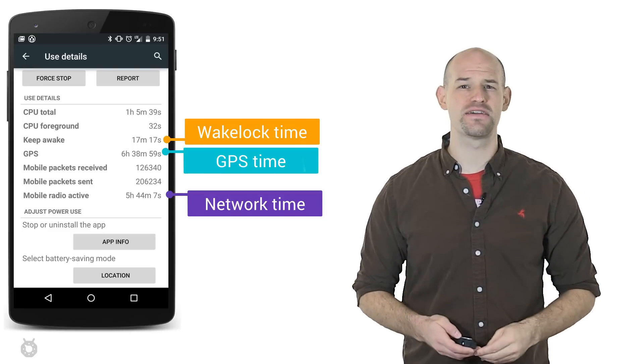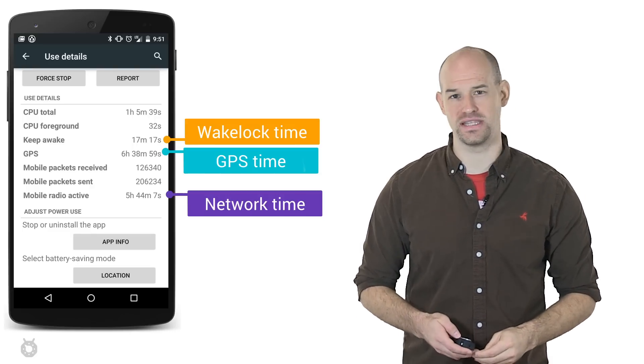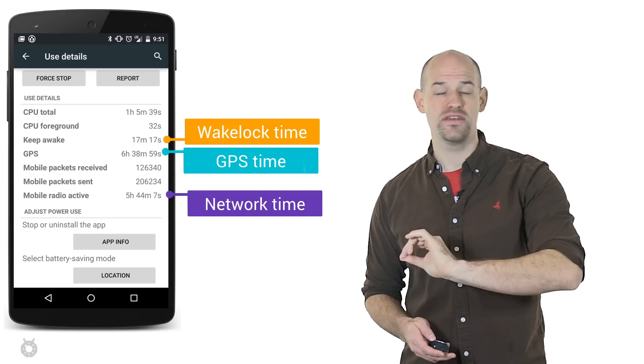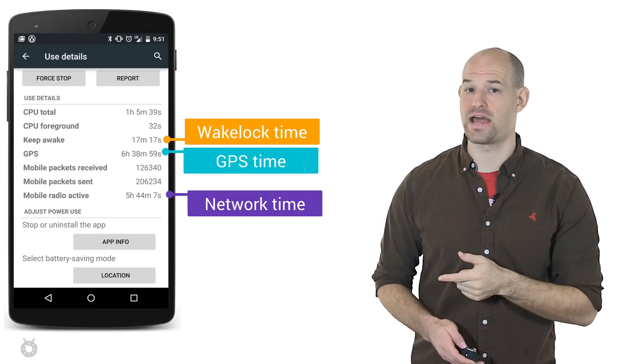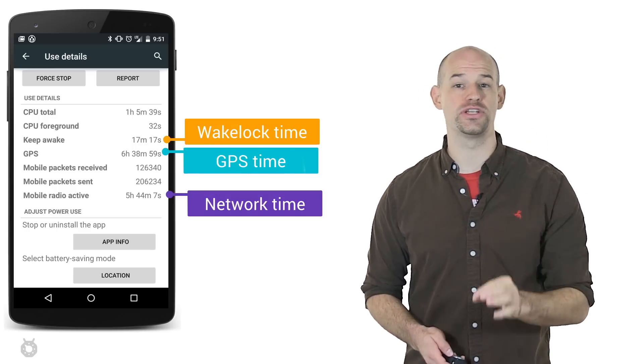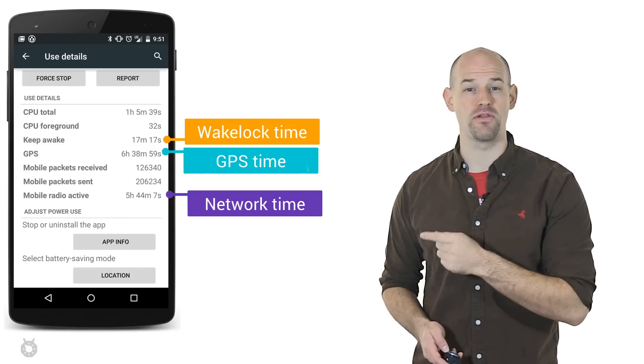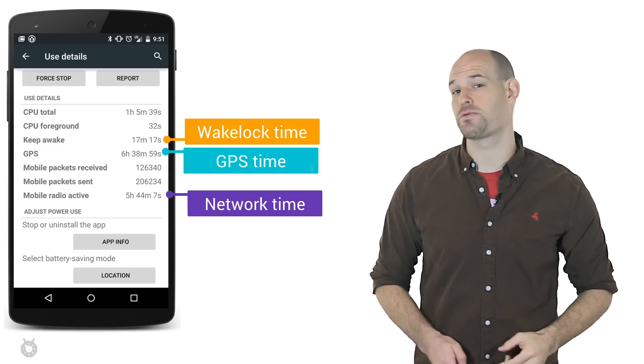Thankfully, Android has several tools to help you track down and fix these battery issues. Firstly, you can get battery data stats on the device by going to Settings, and then Battery, and then choosing the application you're interested in. You'll notice that the data reporting on this screen is mostly about how long your device is awake and its networking activity.